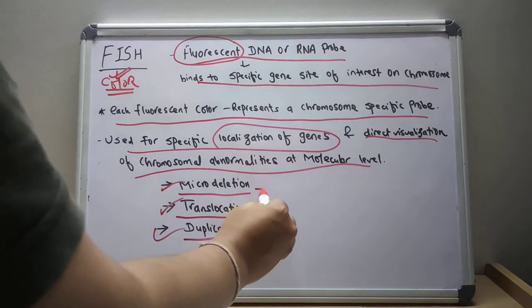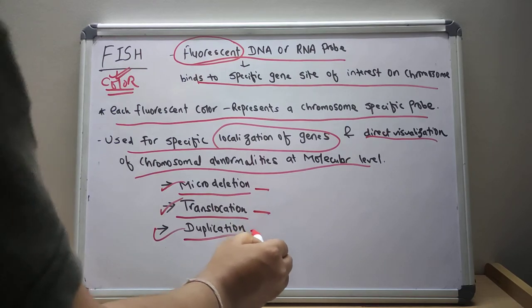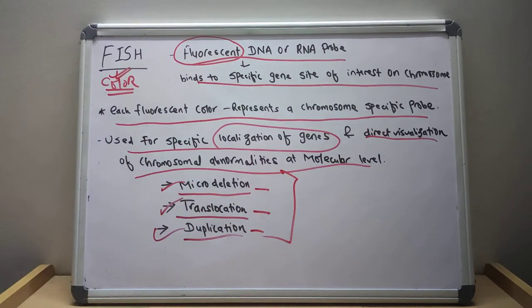You can detect micro deletion, translocation, and duplication by use of fluorescence in-situ hybridization or FISH technique.